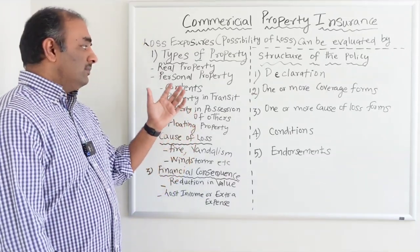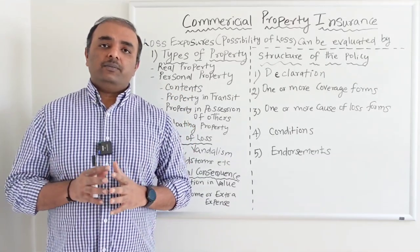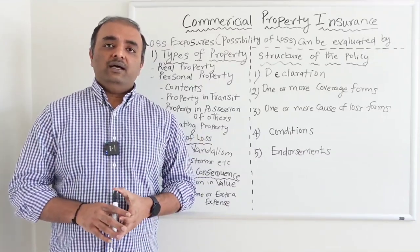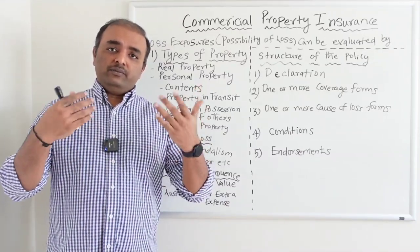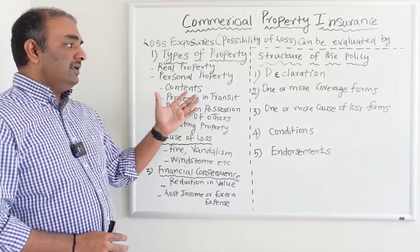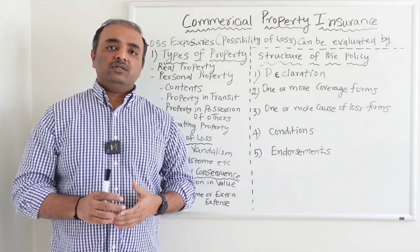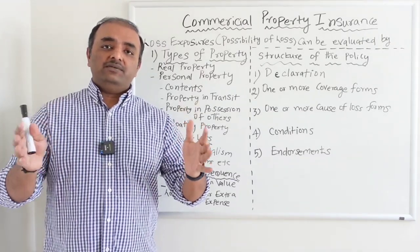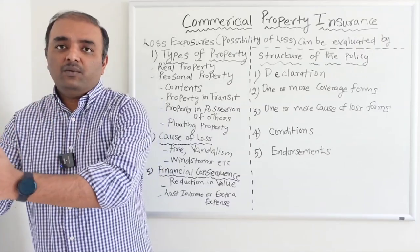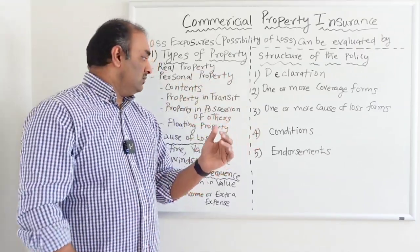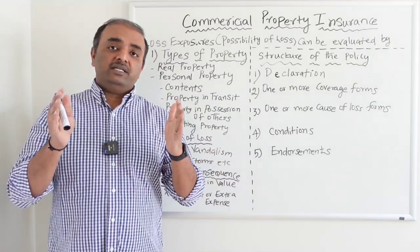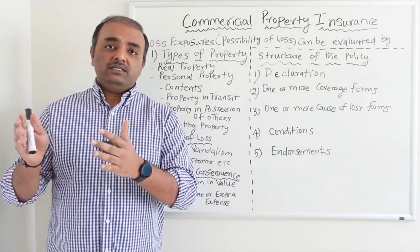Then there is personal property. Under personal property, you could have your own property that you use for your business — like a Xerox machine that you use for business. That's your personal property. There's also property in transit. Most businesses don't keep all property within their building; sometimes they need to take property from one location to another. That's what we call property in transit, and temporary coverage can be given for property that is in transit.